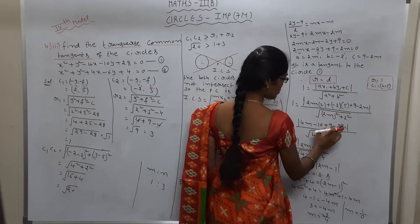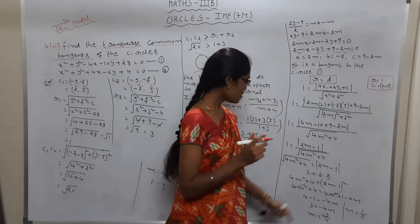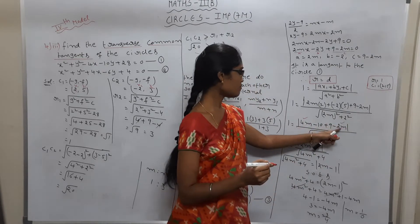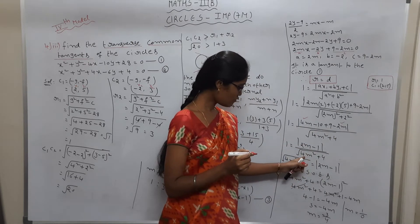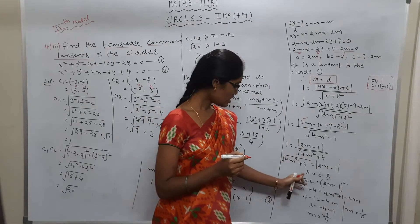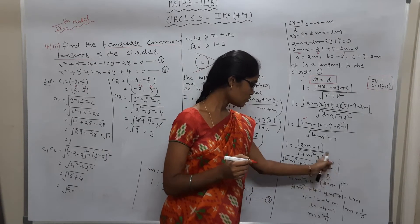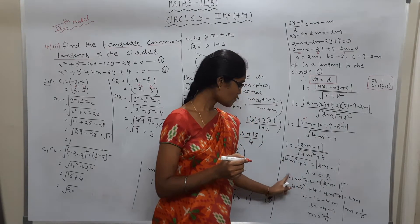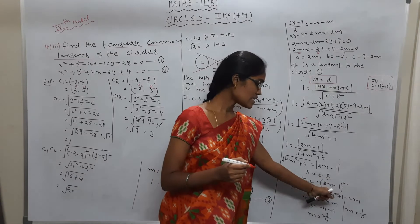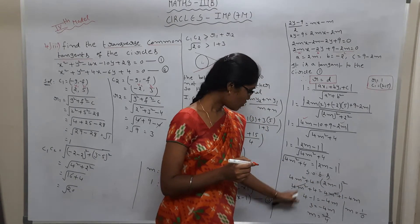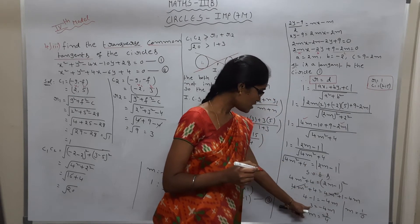Substituting values: numerator becomes 2m(−2) + (−2)(−5) + (9 − 2m) = −4m + 10 + 9 − 2m = −6m + 19... simplifying step by step, denominator is √(4m² + 4). Cross multiplying and squaring both sides: 4m² + 4 = (2m − 1)². Expanding using (a−b)² = a² + b² − 2ab: 4m² + 4 = 4m² + 1 − 4m. The 4m² cancels.